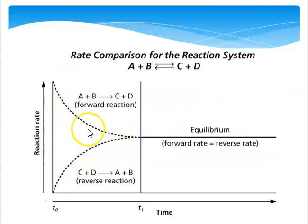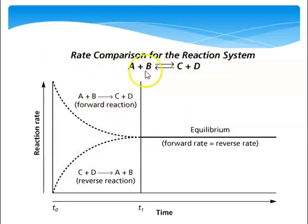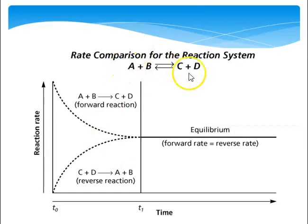When the rates are equal, that's equilibrium. Every time A and B make C and D, there's C and D making A and B — they're going at the same exact rate. What I don't want you to get confused with when you look at this figure is the concentrations. This might make you think you have equilibrium when you have equal amounts of A, B, C, and D — no. We can have equilibrium established when there's millions of times more reactant than product, or vice versa.